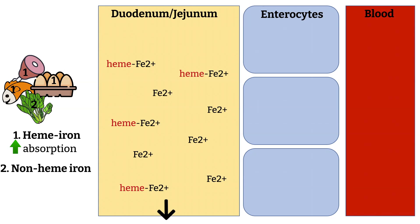Iron actually has two main states: ferric iron or Fe3+ and ferrous iron or Fe2+. When the non-heme iron arrives in the small intestines, it's usually in the ferric state and then it gets reduced to Fe2+ so it can be absorbed. This process of reduction from Fe3+ to Fe2+ relies heavily on the low pH of the small intestines. Whether it's heme iron or non-heme iron, at this point it has been absorbed into the enterocytes.